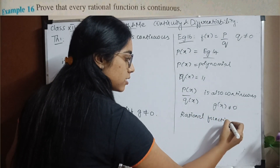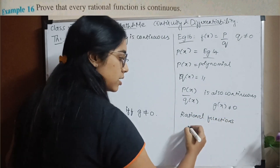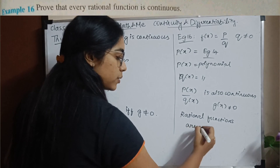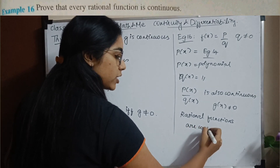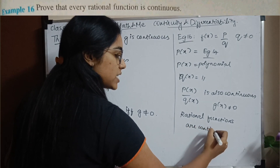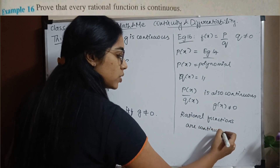Rational functions are continuous. The proof is pretty simple.